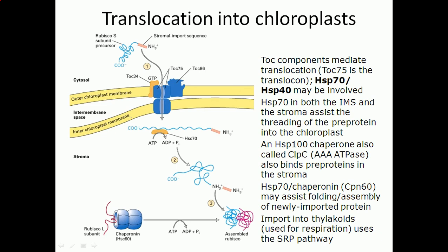If you look at the translocation of protein into chloroplasts, the basic idea is the same. It should have a nascent polypeptide with a signal sequence destined to deliver the protein inside the chloroplast.